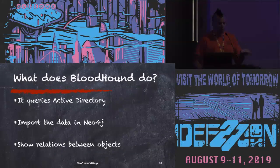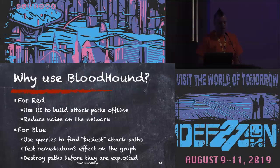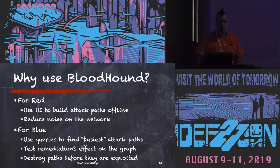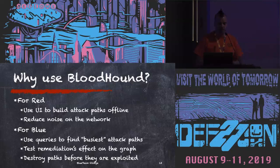What does Bloodhound do exactly? It does three simple things: it queries Active Directory, imports the data into the Neo4j database, and shows the relationships between objects. For red teamers, you can use the UI to build complex attack paths offline, which reduces noise on the network a lot — every time you jump on a machine, you already know which credentials you need and which attack path to follow. For blue teamers, we can use queries to find the busiest attack paths, test remediation, and destroy the paths before they're exploited.